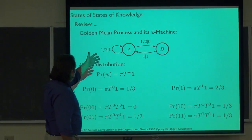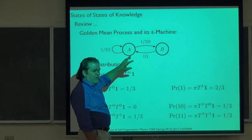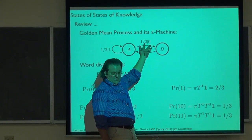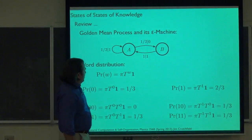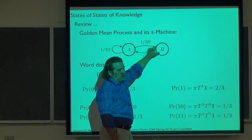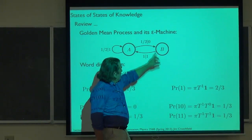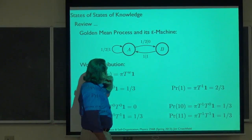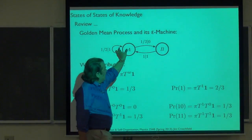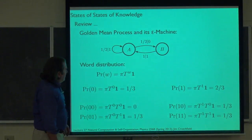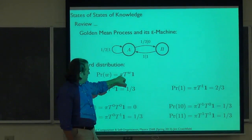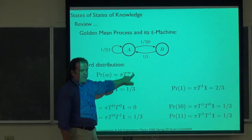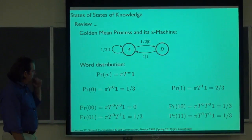If we think of the golden mean epsilon machine as a generator, there are actually two modes of using these epsilon machines. One is in generator mode — transition probability followed by output symbol — where I have the model and want to generate realizations. The other way is as a recognizer: it's reading in zeros and ones, calculating path probabilities. The question is, what words does it produce and what are their probabilities?